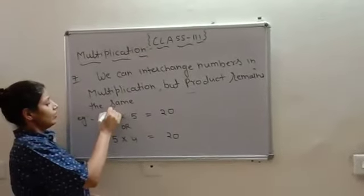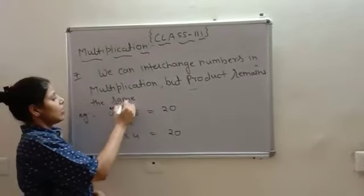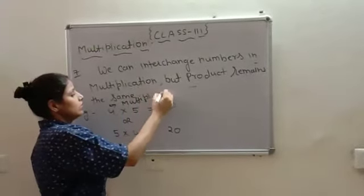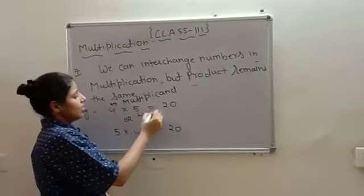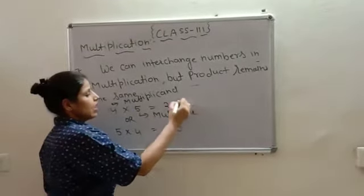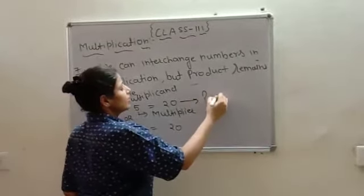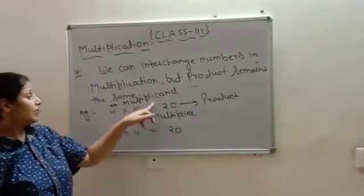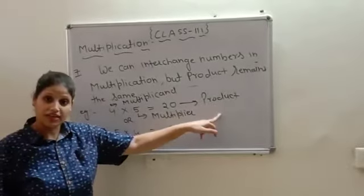This 4 is your multiplicand. Right? This 5 is your multiplier, and this 20 is your product. Am I right? This is what we have done now. So, multiplicand multiplied by multiplier is also product.